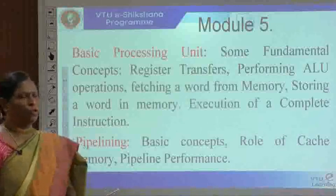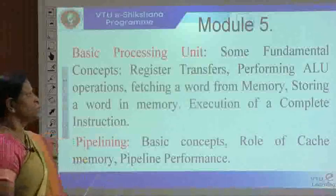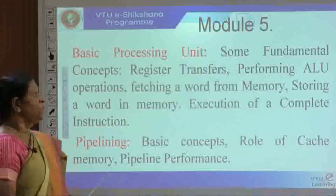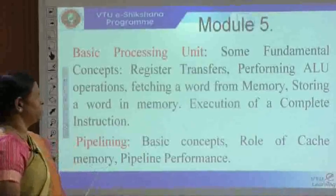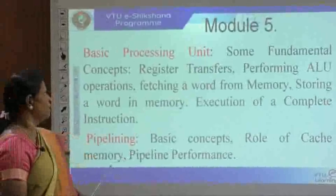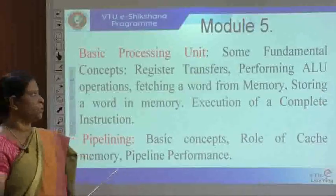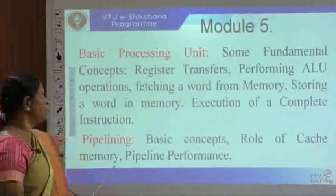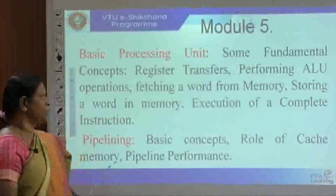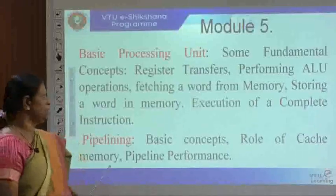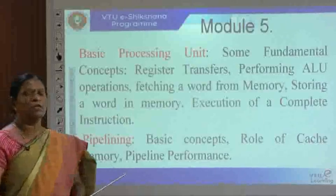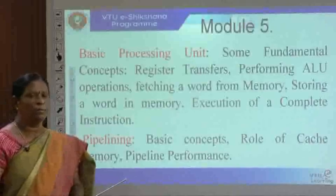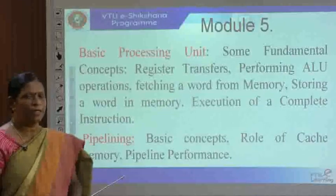Moving to the last module of this subject, module 5 consists of the basic processing unit. Topics include: fundamental concepts of the basic processing unit, register transfers, performing ALU operations, how to fetch a word from memory, control sequence, detailed control sequence of operations, how a word can be stored in memory, and execution of complete instructions including branch and unconditional branch instructions.